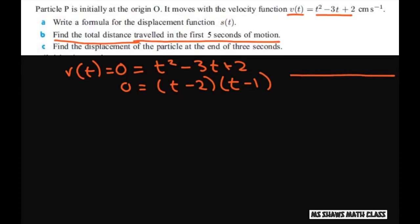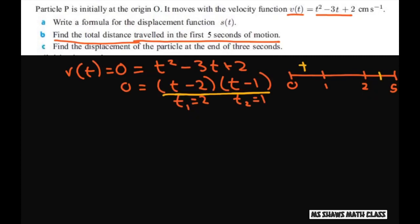We have t equals 1 and t equals 2 on our sign diagram from 0 to 5. We want to know if we're going in the negative or positive direction. Plug in 0: you get positive. Both factors are linear. Plug in 3: you also get positive. Between 1 and 2, plug in 1.5: one factor is negative and the other positive, so multiplied together that gives a negative.